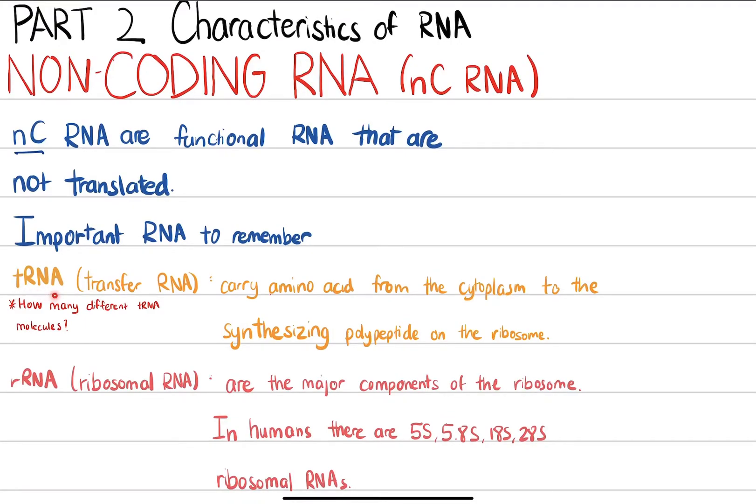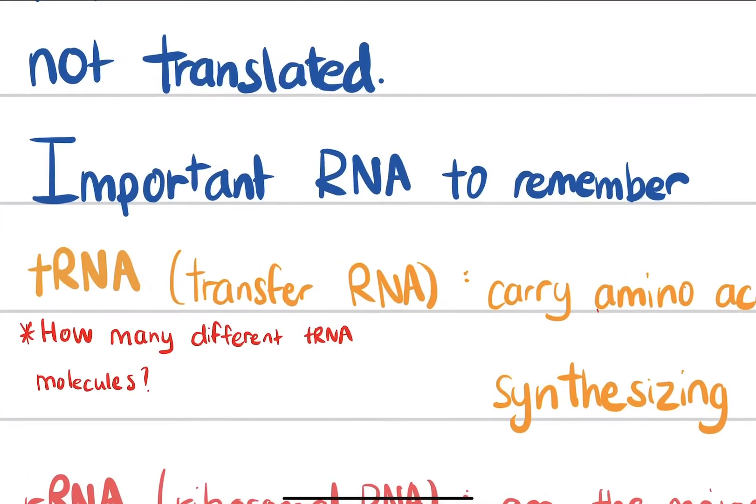First is tRNA. You might be aware what tRNA does - it's transfer RNA. It carries amino acid from the cytoplasm to synthesize polypeptides in the ribosome. Before we talk about ribosomal RNA, I want to throw out an interesting fact. How many different tRNA molecules do you think our bodies have? Our bodies have at least 20 different tRNAs.